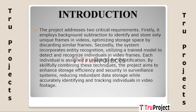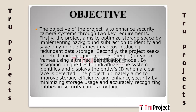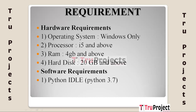The project's objective is to improve security camera systems through two essential goals. The first goal is to reduce redundant data storage by using background subtraction to detect and save only unique frames, optimizing storage capacity. The second goal is to use a trained identification model to find and identify humans in video frames, recognizing and displaying each entity's ID when a clear face is detected by assigning each person a special ID.